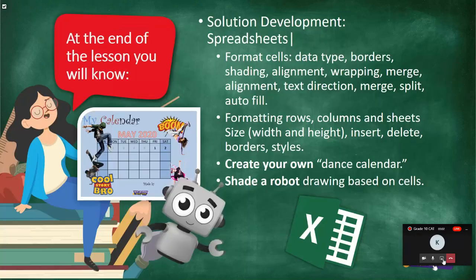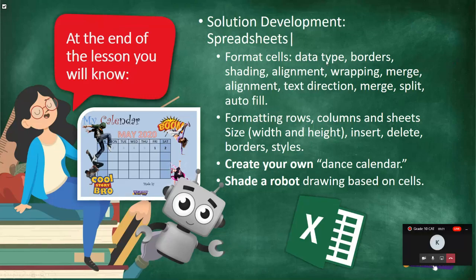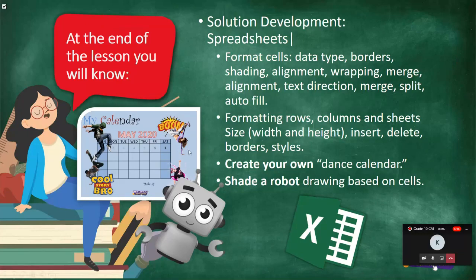So what are we going to do today? We're going to start with spreadsheets. We're going to play with data types, borders, shading, alignment, wrapping and merging, text direction, splitting, auto-fill, and formatting rows and columns. The most important thing is that CAT is a practical subject. What I want you to do is create your own dance calendar today — here's a little example of something you're going to build.